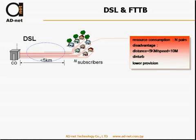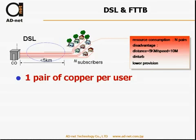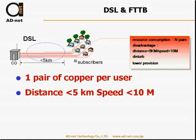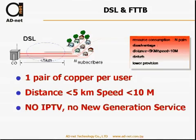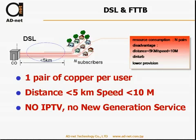Let's start with the old idea of DSL. You have the CO with the DSL, then a copper cable installed, and every subscriber uses one copper cable. That means one pair of copper per user, a distance of only five kilometers, and a speed of less than 10 megabits. That means you cannot provide IPTV, you cannot provide any new generation services, and no triple play is possible.